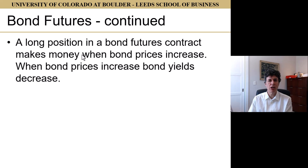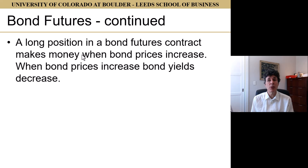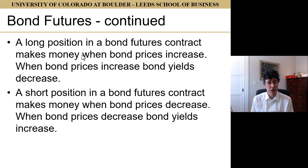A long position in a bond futures contract is an agreement that eventually — these are deliverable contracts — eventually you're buying the bonds. The bond futures contract lets you lock in the price of those bonds, which means that you make money when bond prices increase. And of course, when bond prices increase, bond yields decrease. A short position in a bond futures contract means that you're contractually obliged to sell those bonds at the maturity of the contract. That makes money when the bond price decreases. When bond prices decrease, of course, bond yields increase.